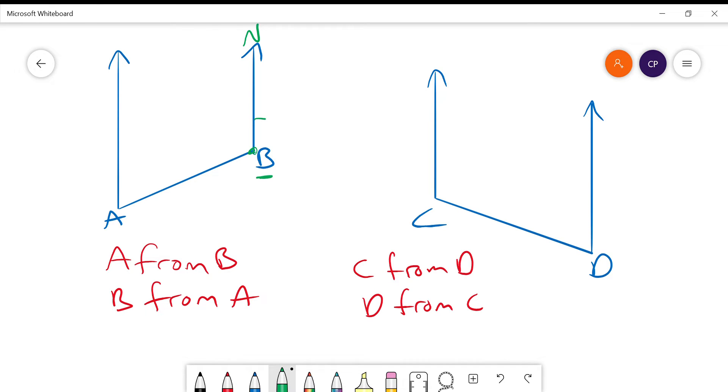We then measure in a clockwise direction all the way around to the direction heading to A. So A from B in this case is 250 degrees.